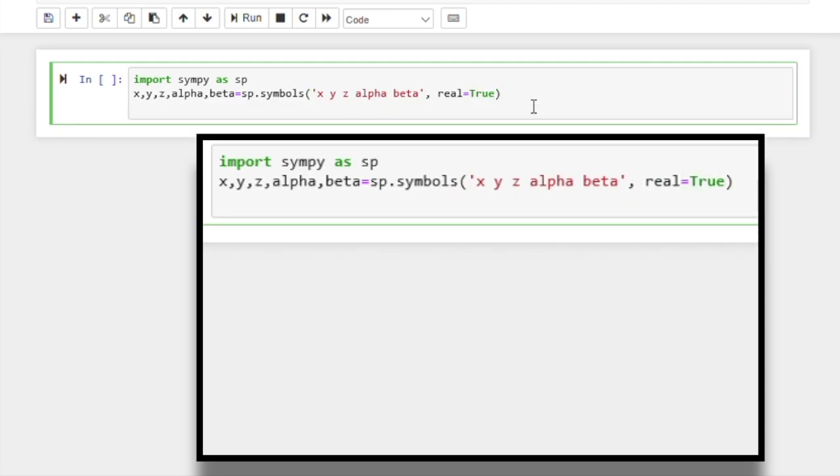We then also define three positive integer variables. So we use the same symbols function from the SymPy library, but the list of symbols is different now, i, j and k. And we want these variables to be integer, so we set integer equal to true. And we want them to be positive, so we set positive equal to true.